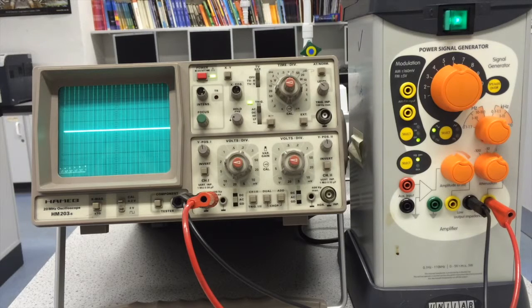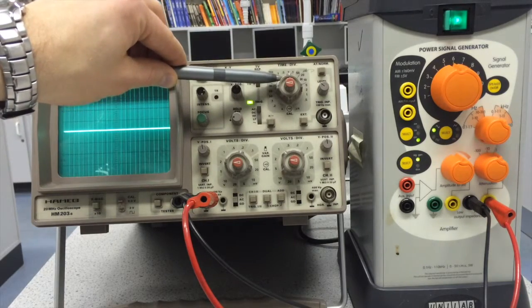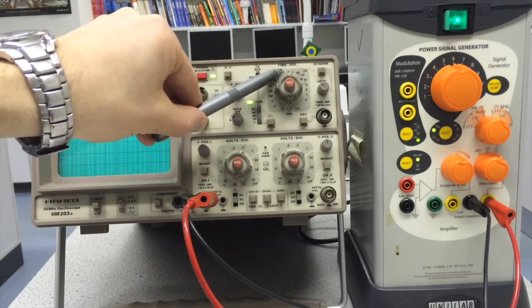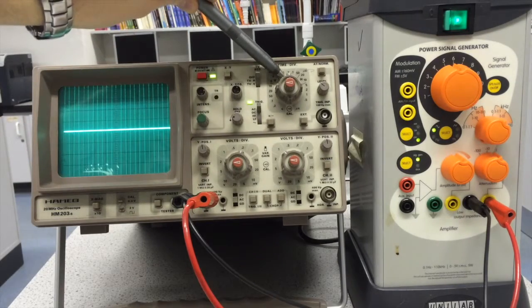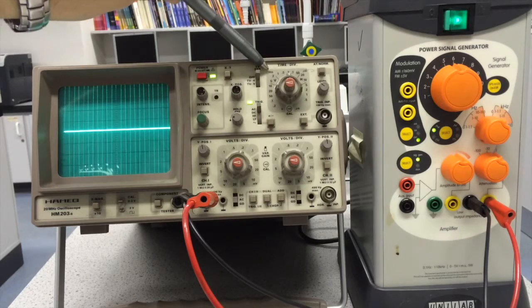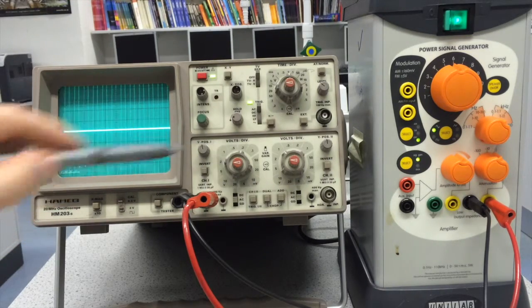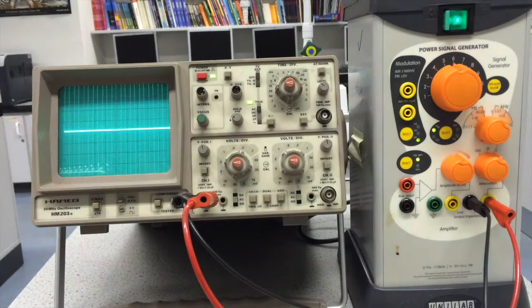So what settings have we got for the oscilloscope? The key ones that we'll be using are here: the time-base setting, so this is telling me the time per division here, and this is on 0.2 milliseconds at the moment. Then we've got the Y-gain setting here, volts per division, and this is on 0.2 volts per division.